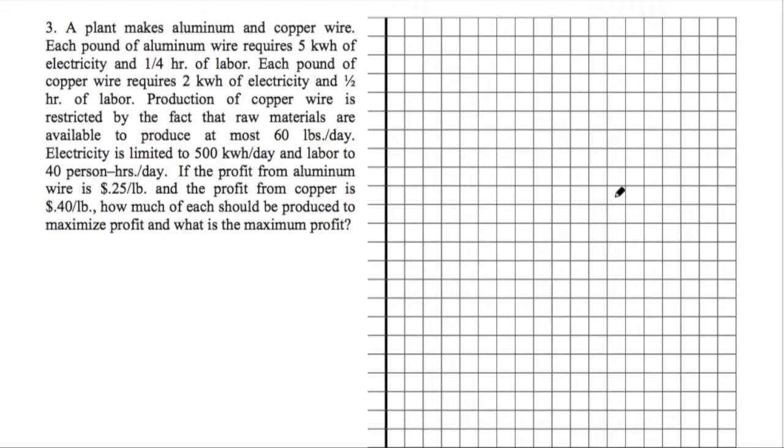Electricity is limited to 500 kilowatt-hours per day and labor to 40 person-hours per day. If the profit from aluminum wire is 25 cents per pound and the profit from copper is 40 cents per pound, how much of each should be produced to maximize profit and what is that maximum profit?